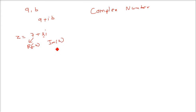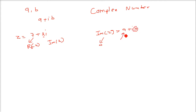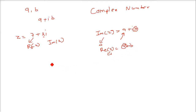We have a purely real and purely imaginary complex number also. For example, if the imaginary part of Z is 0 — that is, in A plus iB, if B is 0 — then only A remains, so this is a purely real complex number. If in A plus iB the real part is 0, meaning A is 0, then only the imaginary part remains, so this is a purely imaginary complex number.